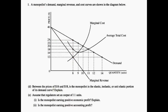Now let's move on to part D. Between the prices of 16 and 18, is the monopolist in the elastic, inelastic, or unit elastic portion of its demand curve? We want to look at the price points of 16 and 18 and assess the marginal revenue curves at those points. If we look at those two price points, we see that the corresponding marginal revenue is below the horizontal axis, therefore marginal revenue is less than zero. Knowing that, we are in an inelastic portion of the demand curve, which means a 1% change in price will lead to a less than 1% change in quantity.